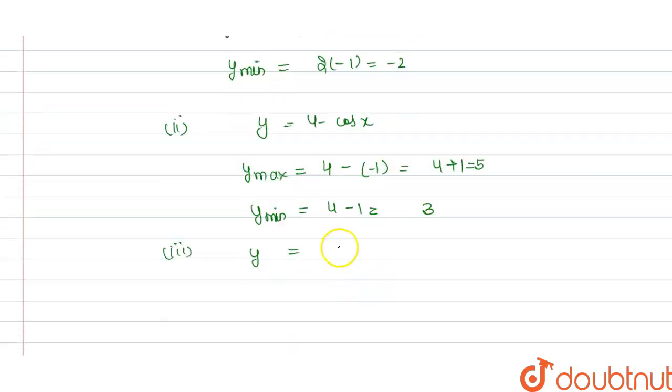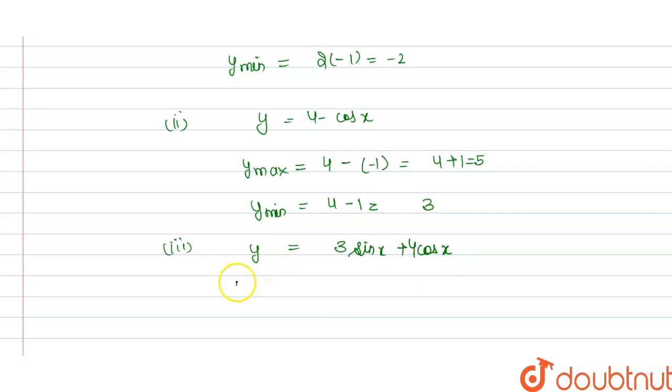We write y equals 3 sine x plus 4 cos x. We have the maximum value is: we can square this coefficient of sine and x, that